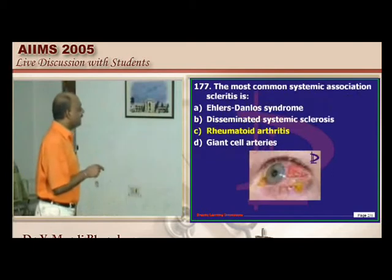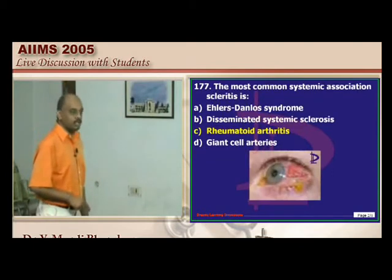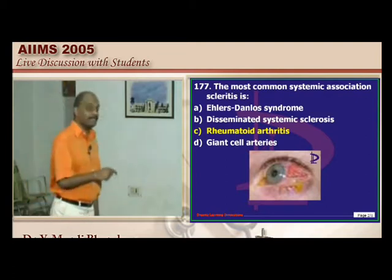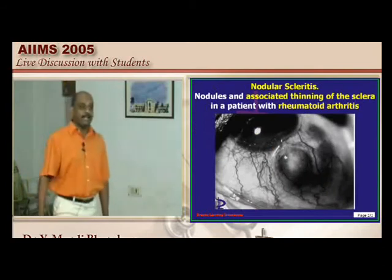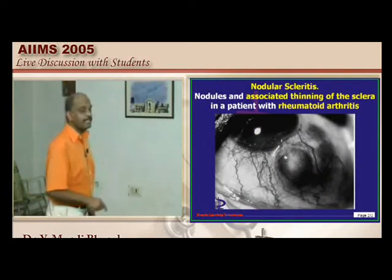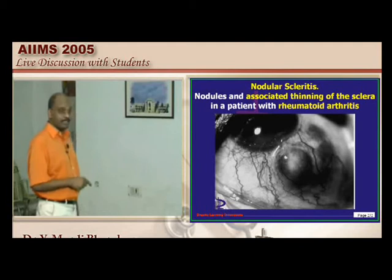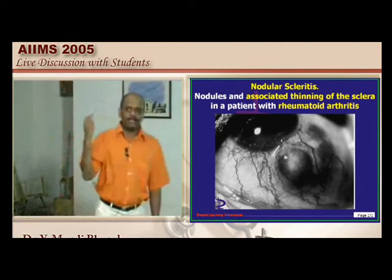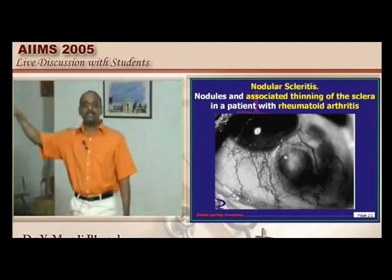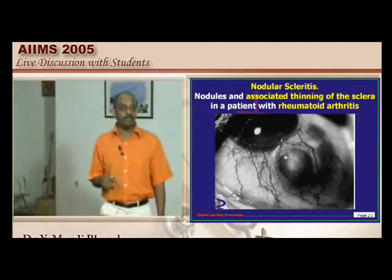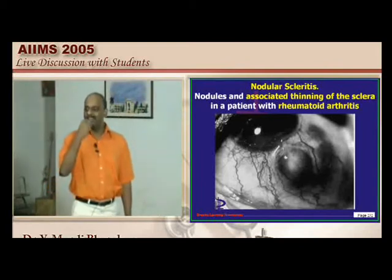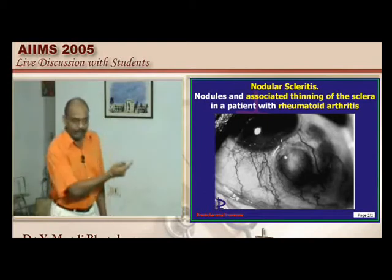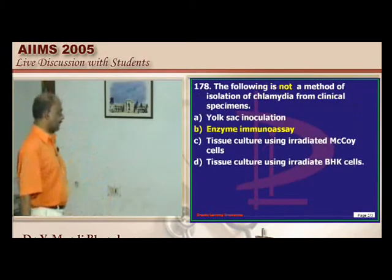Scleritis with systemic disease: rheumatoid arthritis should not be forgotten. Nodular scleritis with thinning of the sclera leading to perforation — scleromalacia perforans — is seen in rheumatoid arthritis. Involvement of the sclera and exocrine glands with drying of the mouth in a rheumatoid patient is Sjögren's syndrome, where labial gland biopsy shows lymphocytic infiltration.